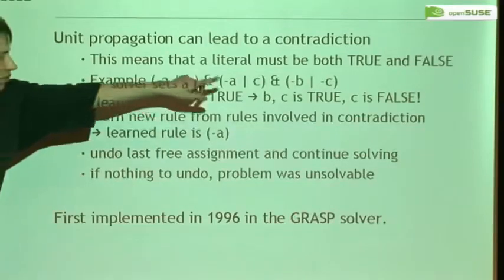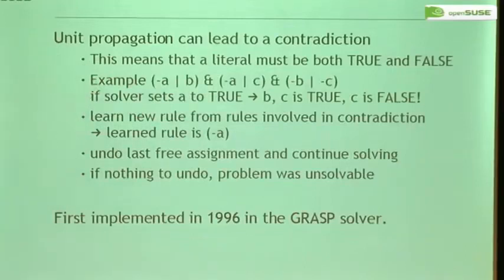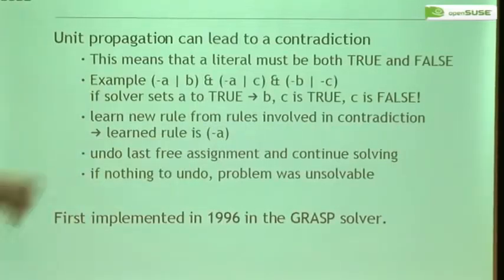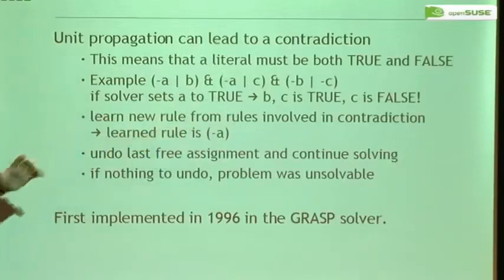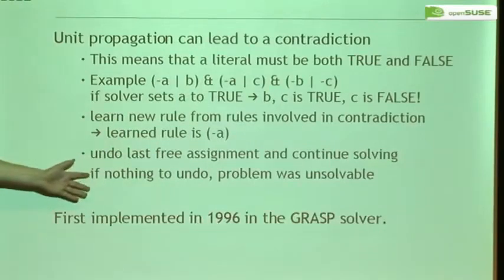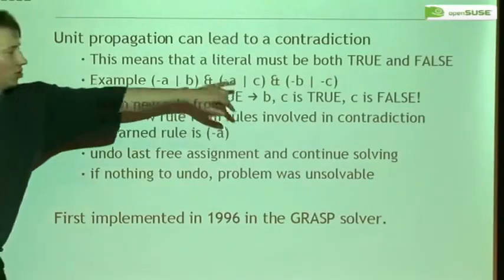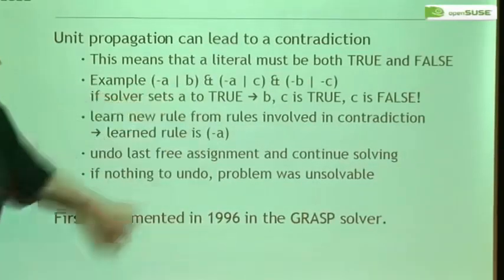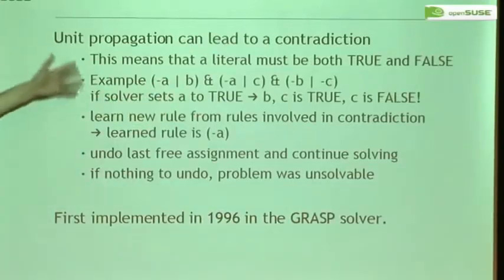What happens is that the SAT solver algorithm then learns from all the rules involved in the contradiction, and learns a new rule — this is called a learned rule — added to the set of rules. In this case it's easy: the learned rule is just 'A can't be installed' because then we get this contradiction. But learned rules can actually contain any number of literals and can be more complex than this one. If we can undo the steps that led to the contradiction, we can continue solving.